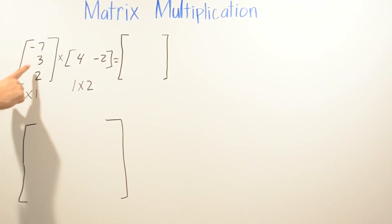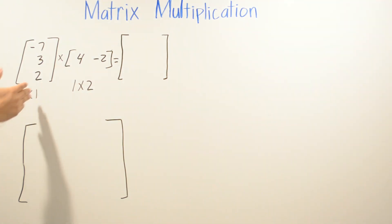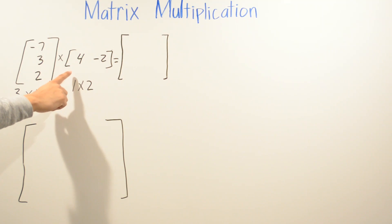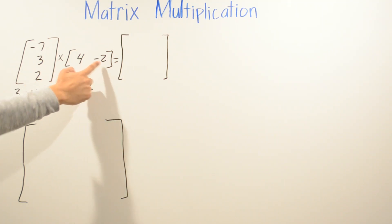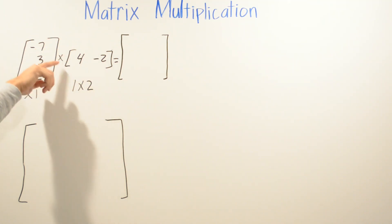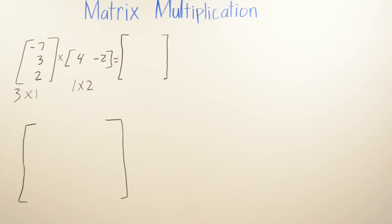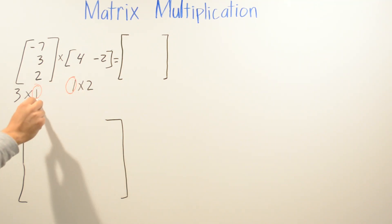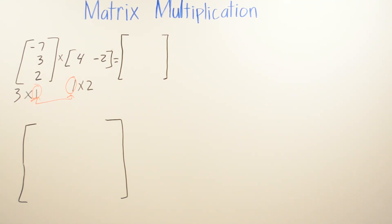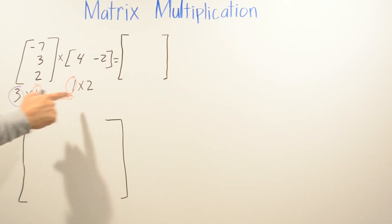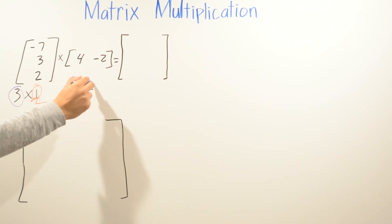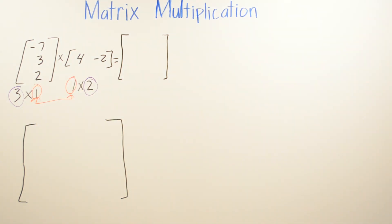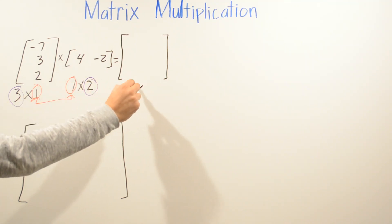In this next example, the first matrix has values negative 7, 3, 2 — it is a 3 by 1 matrix with 3 rows and 1 column. The second matrix has values 4 and negative 2, making it a 1 by 2 matrix. The inner dimensions both equal 1, so we can multiply. The resulting matrix will be 3 by 2.